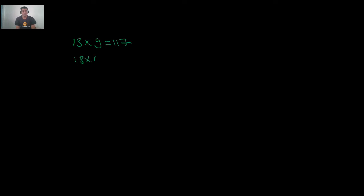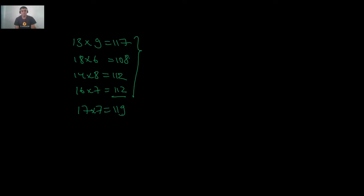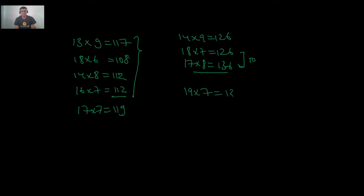For the multiplication tables up to 20, make groups. For example: 13 × 9 = 117, 18 × 6 = 108, 14 × 8 = 112, 16 × 7 = 112, 17 × 7 = 119. Notice patterns: 14 × 9 = 126 and 18 × 7 = 126; 17 × 9 = 153 and 19 × 7 = 133 — the difference between 9 and 7 is 2, and the difference between 153 and 133 is also 20.